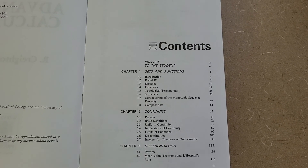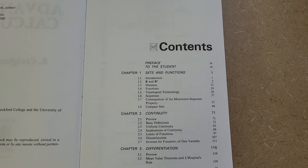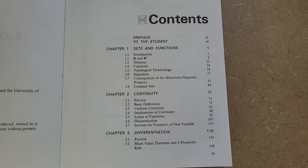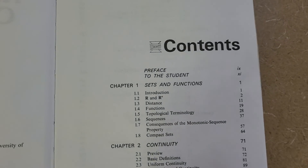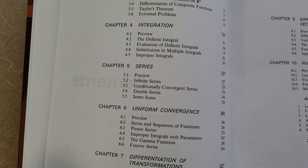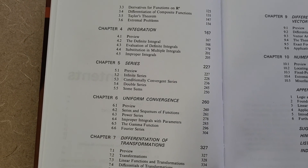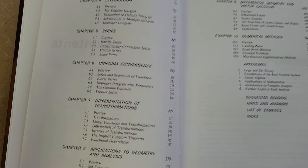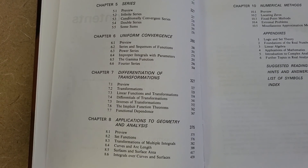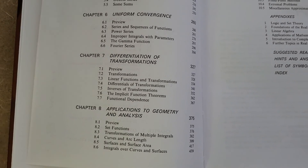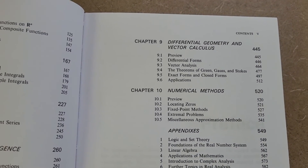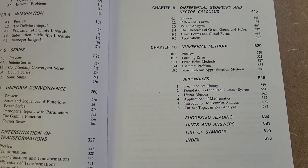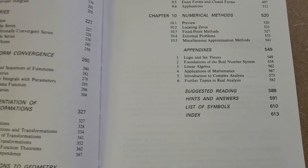Looking at the table of contents, since this is an advanced calculus book it still covers a lot of familiar concepts from vector calculus and Calculus 1 and 2. We have Chapter 1 on sets and functions, followed by continuity, differentiation, integration, and series — all covered in Calculus 1 and 2 — then uniform convergence. Chapters 7 through 9 cover vector calculus and calculus of several variables: differentiation of transforms, geometry, analysis, differential geometry. Chapter 10 on numerical methods mainly talks about approximation methods, and there are hints and answers at the back.